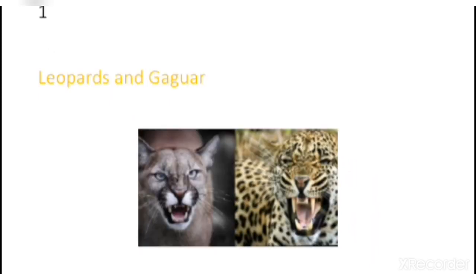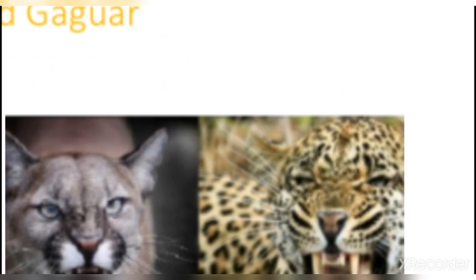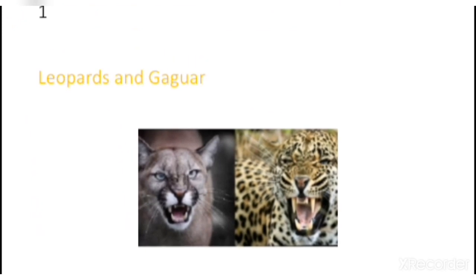Number 1: Leopard and Jaguar. As you can see in this picture, these two animals are a leopard and a jaguar, and these animals are also very hard to identify. I have chosen a picture that makes it easier to see the difference, but in real life they can have the same colors and characteristics, making them very difficult to tell apart.